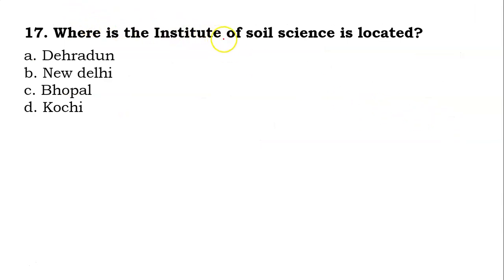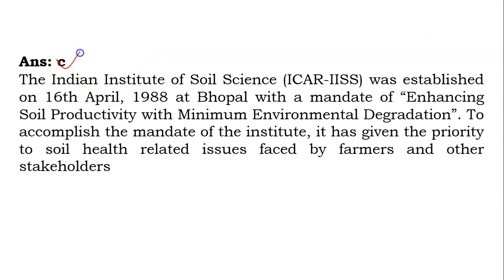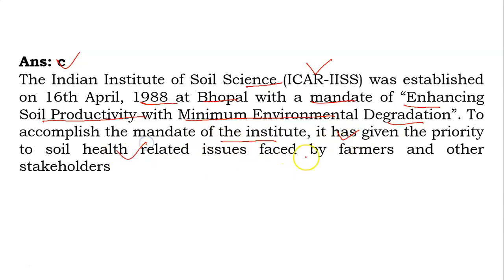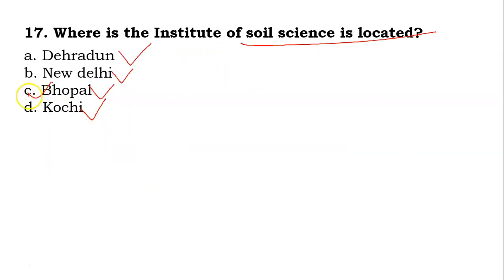The seventeenth question: where is the Institute of Soil Science located? Options are Dehradun, New Delhi, Bhopal, or Kochi. Its answer is C — it is located at Bhopal. The Indian Institute of Soil Science, ICAR-IISS, was established on 16th April 1988 at Bhopal with a mandate of enhancing soil productivity with minimum environmental degradation, giving priority to soil health related issues faced by farmers and other stakeholders.